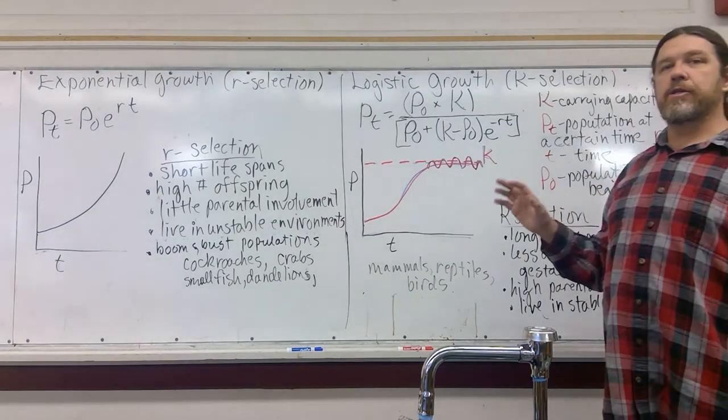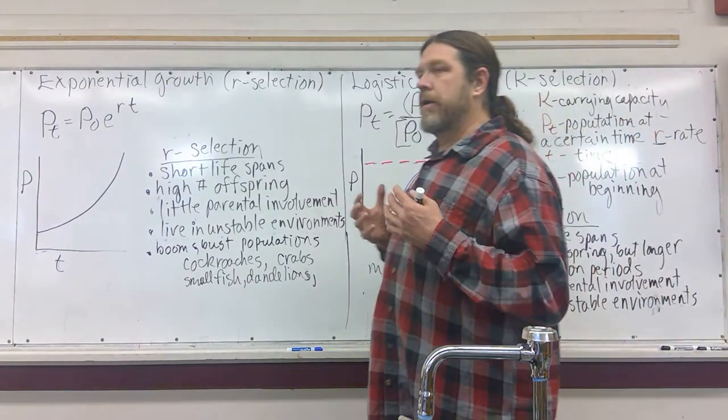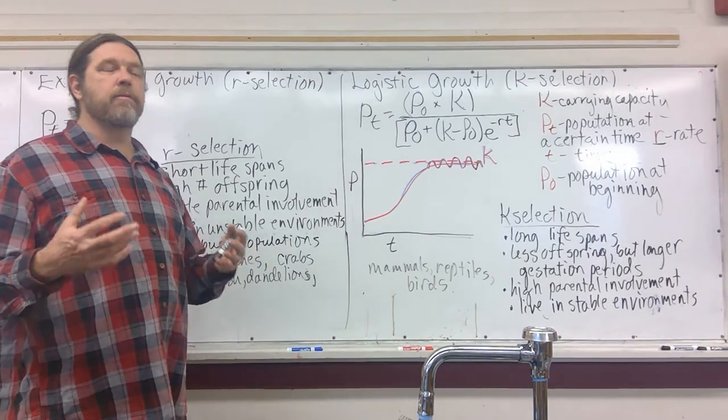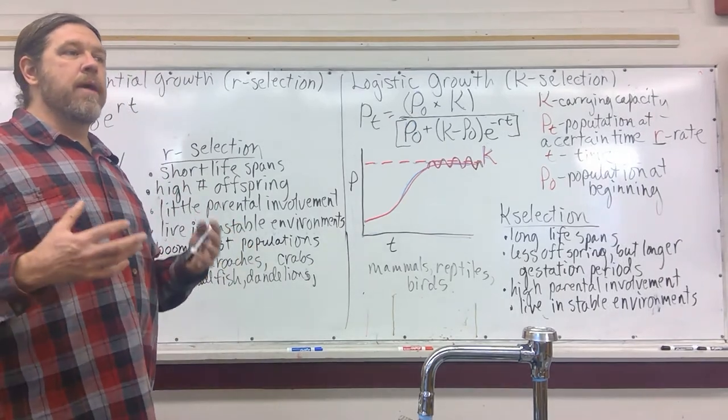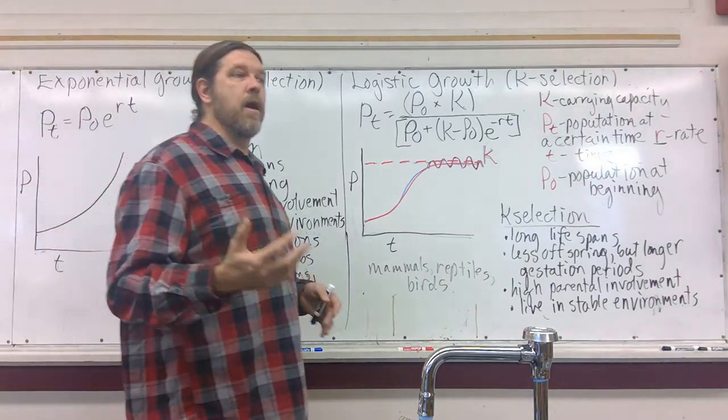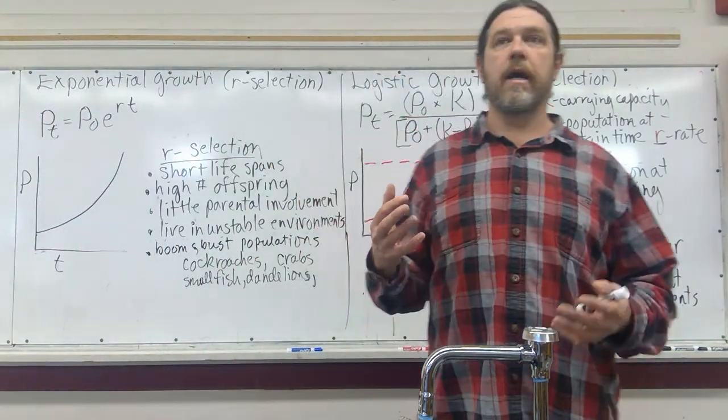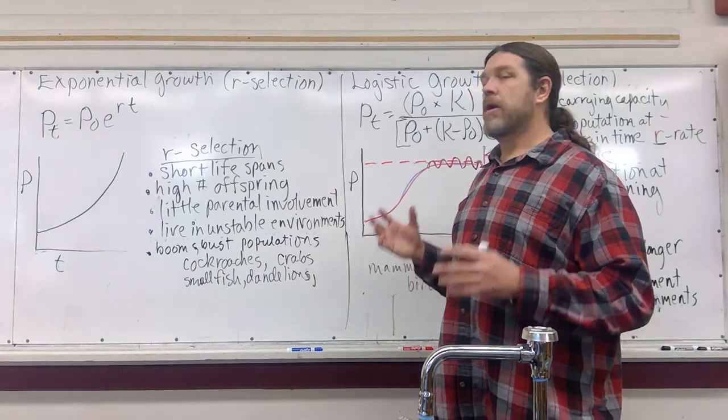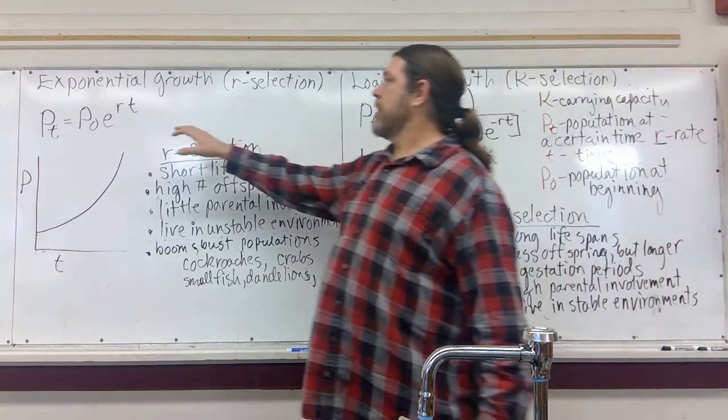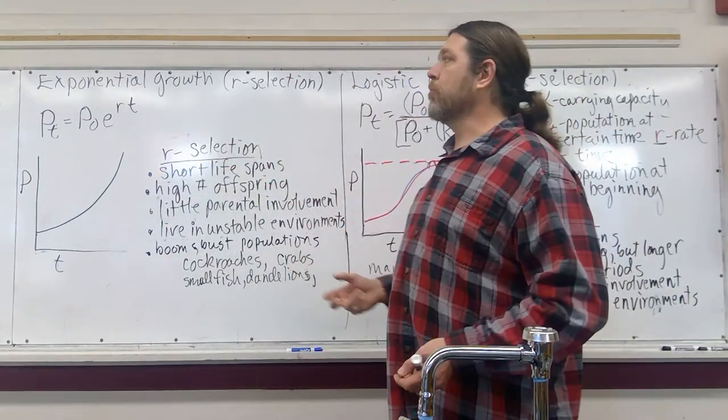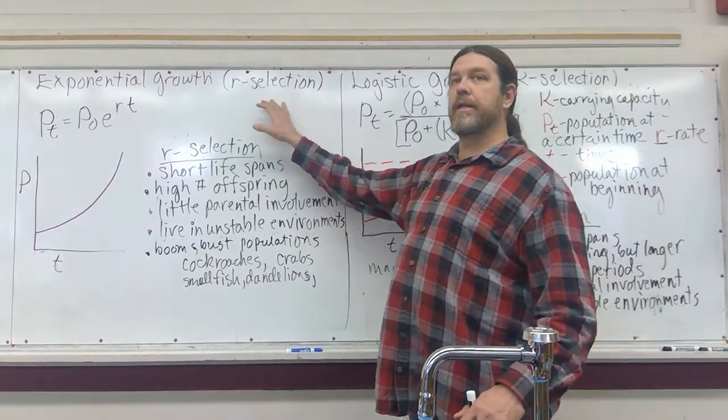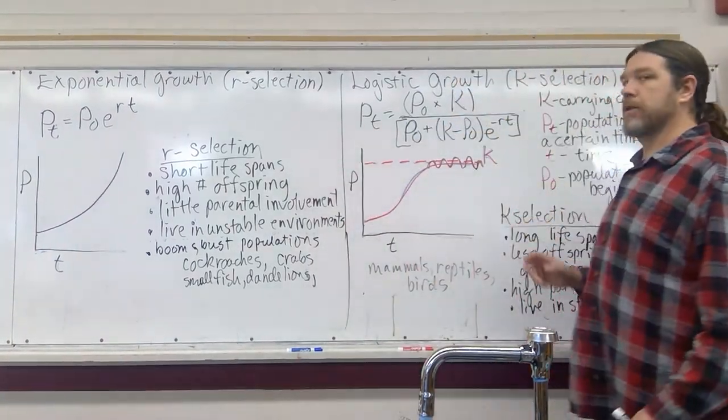The r/K selection model of species reproduction is a useful way of looking at why a particular species may reproduce and have the life cycles that they do based on certain environmental pressures that over time their population is adapting to. We'll also look at how a couple of basic mathematical equations fit this sort of dichotomy between what we call r-selected species and K-selected species.